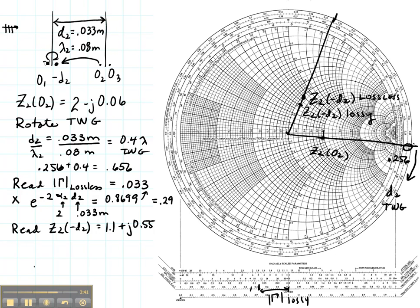Remember, it's ohms that cross the boundary. So I need to get this value in ohms. In order to do that, I'm going to denormalize by multiplying by eta 2. That's going to give me a value in ohms. The number is 45.4 plus J, 24.3 ohms. And that is Z2 at minus D2.